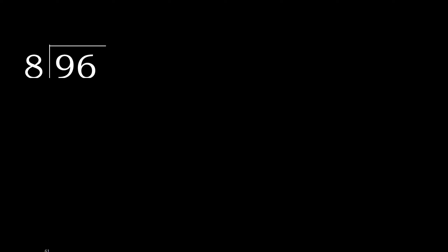96 divided by 8. 9 is not less, therefore work with 9. 8 multiplied by which number is nearest to 9 but not greater? 8 multiplied by 2 is 16, which is greater. Multiplied by 1 is 8, which is not greater. 9 minus 8 is 1.